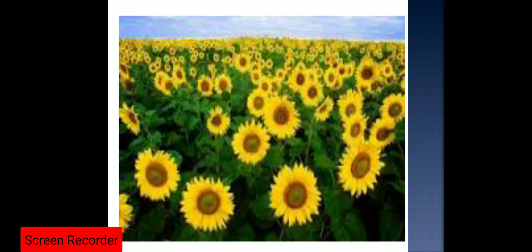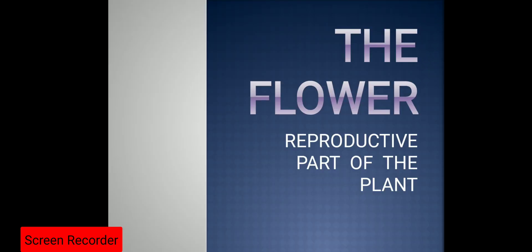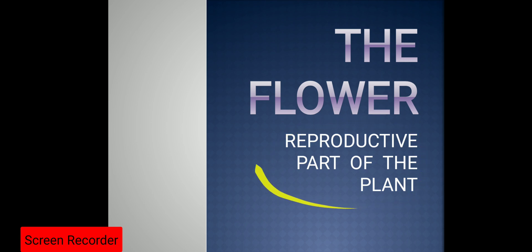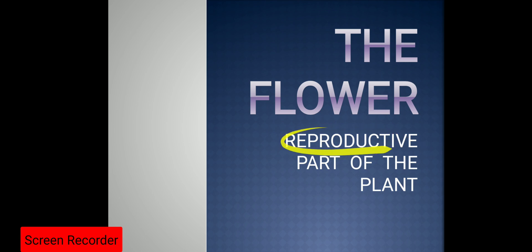Today we have to study about flowers. Flowers are the reproductive parts of the plant. In the case of angiospermic plants, which are the flowering plants, the reproductive part is the flower.